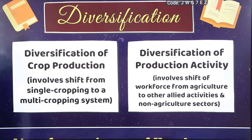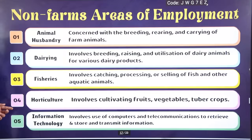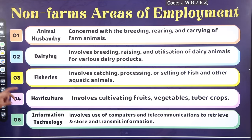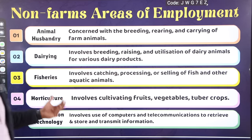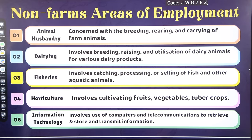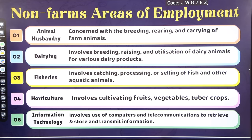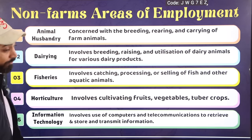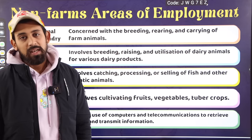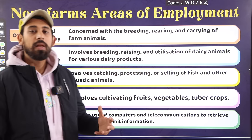Another form of diversification of production activity involves a shift of workforce from agriculture to other activities. These include animal husbandry — breeding, rearing, and caring for farm animals like goats and sheep — dairy products, fisheries, and horticulture including fruits and vegetables.